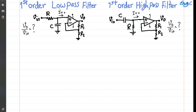Both first-order low-pass filter and first-order high-pass filter using a one op-amp design are shown here. We want to find the voltage transfer function, basically Vout over Vin for both of them, and then intuitively discuss and derive the transfer function.